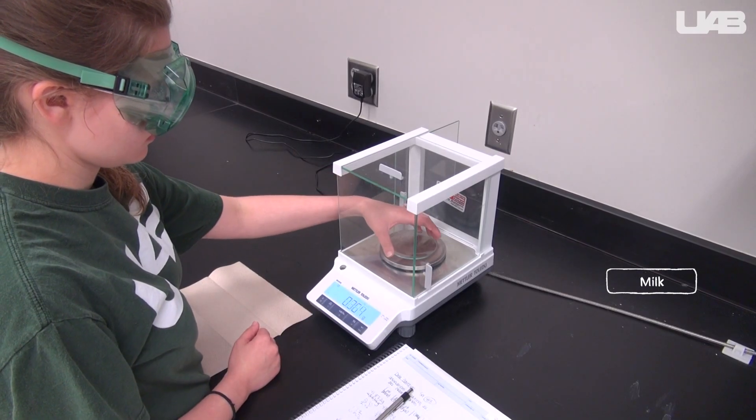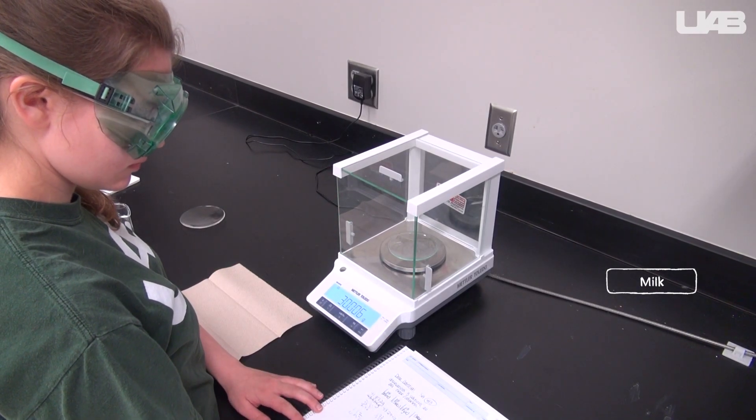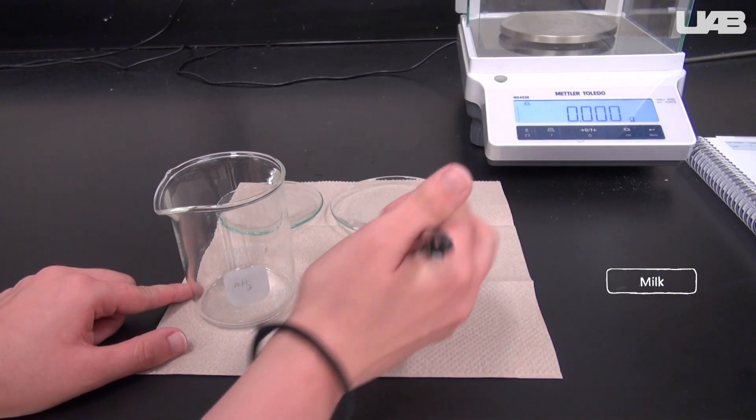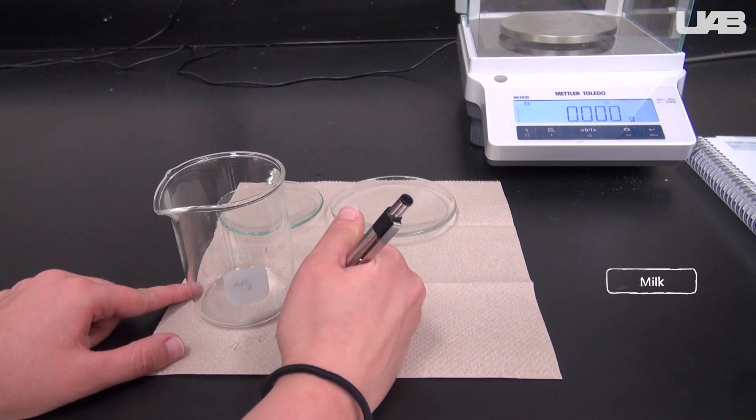You should also determine the mass of a 250 milliliter beaker and two watch glasses, then set them aside for later. Keep track of which is which. It may be helpful to use two different size wash glasses.